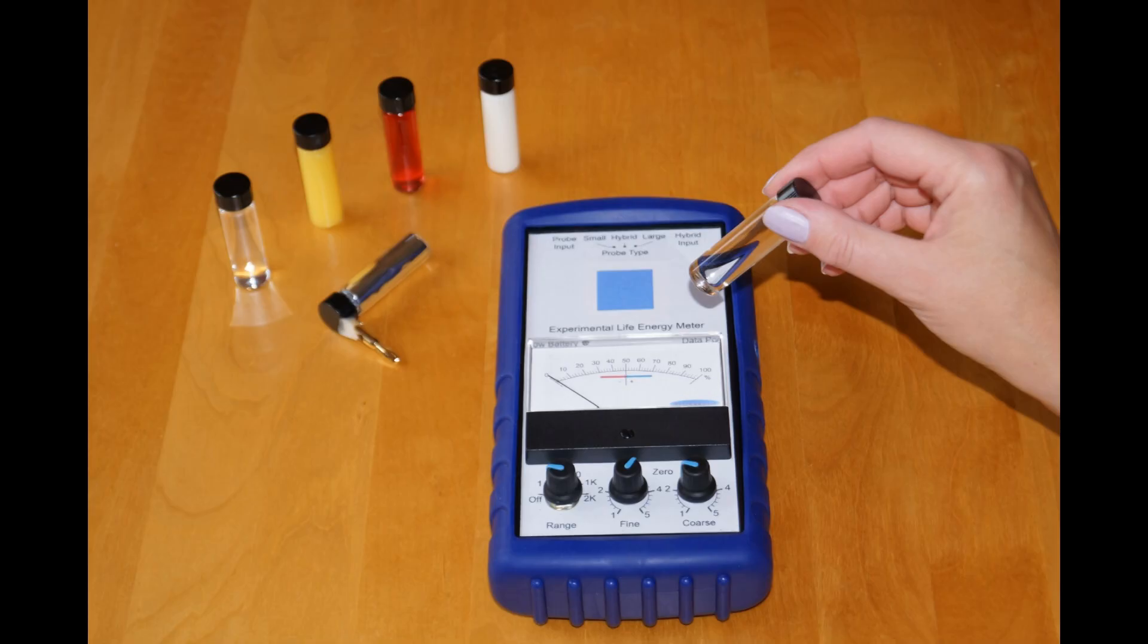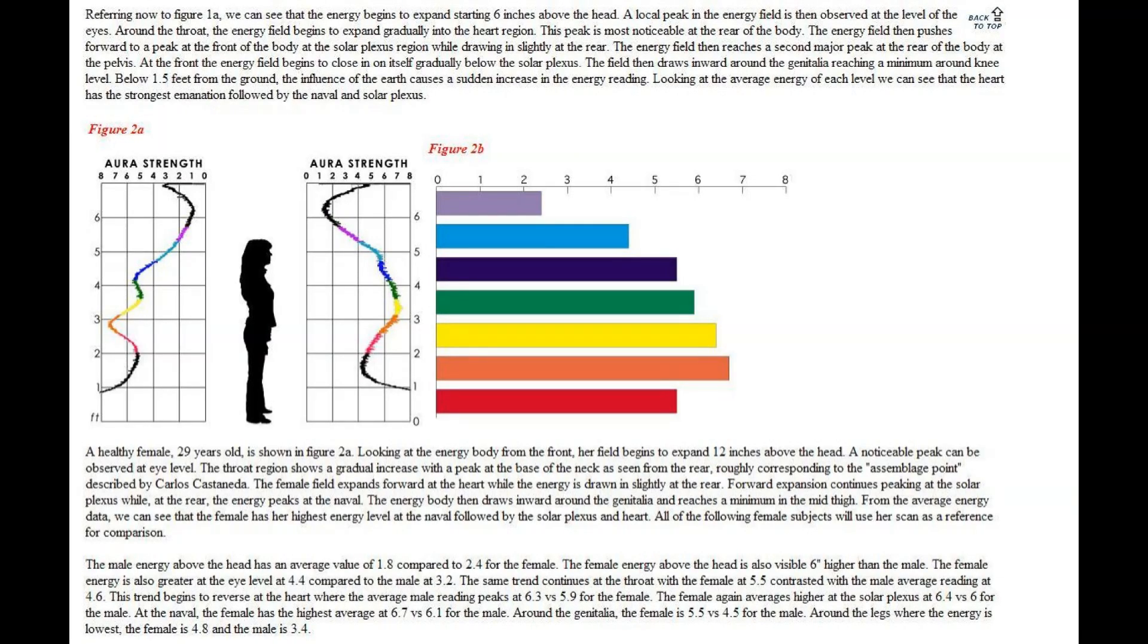The experimental life energy meter is a modern version of Reich's invention using advances in electronics to make it safe, compact, and portable. This device can be used to measure life energy in people, plants, food, liquids, objects, and generating devices.